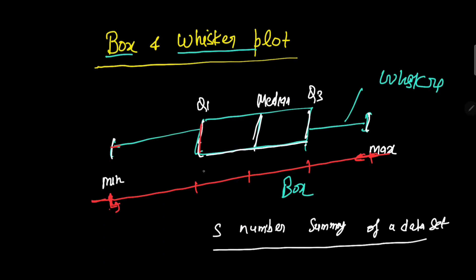Q1 represents quartile one, which means 25 percent of the data. We can say that approximately 25 percent of data lies between the minimum and quartile one. Similarly, between quartile three and the maximum value, there will also be 25 percent of data values.